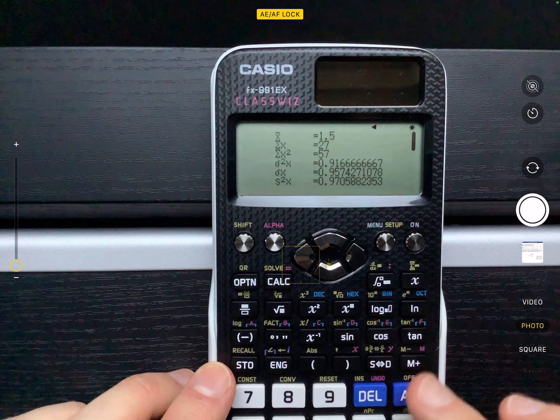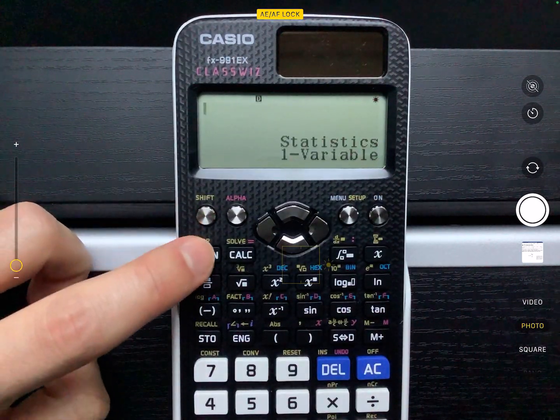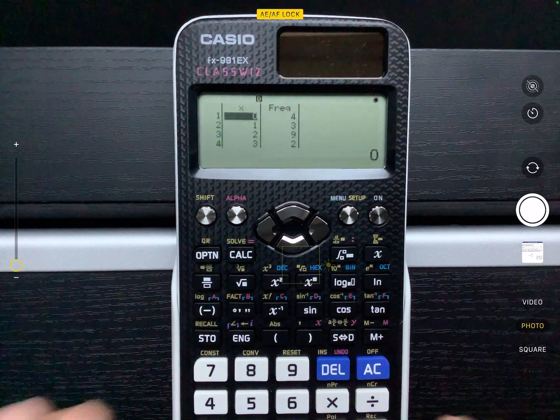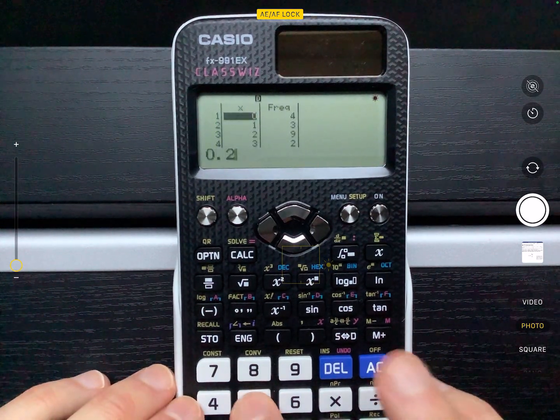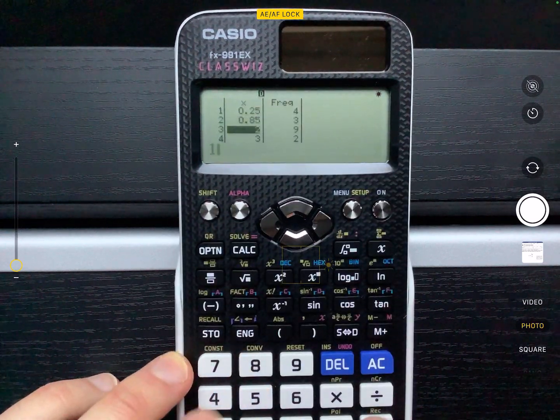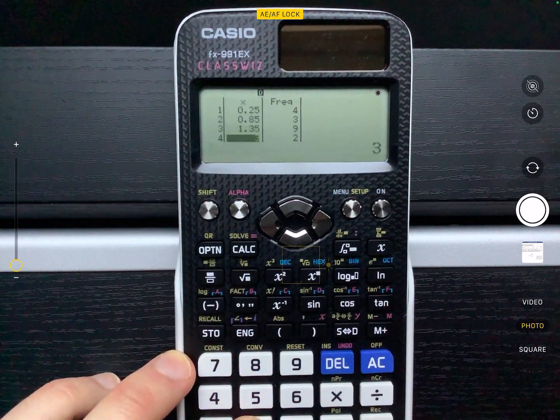Okay. So to go to the Class Wiz, press AC, press options, and then number three to take it back to the data. And this time we're going to do the midpoint. So it's a 0.25, a 0.85, a 1.35, and a 2.